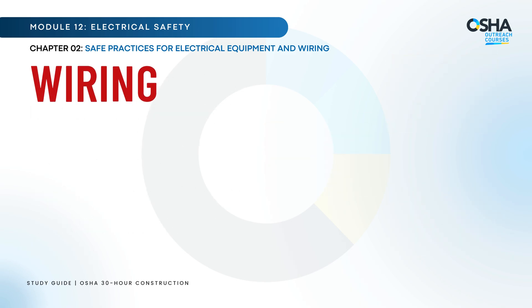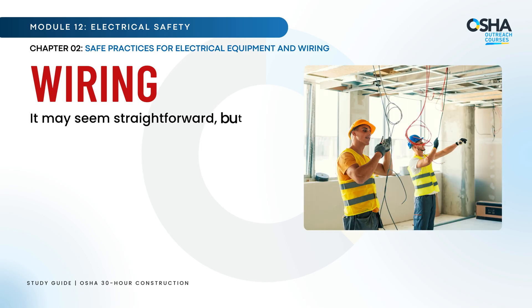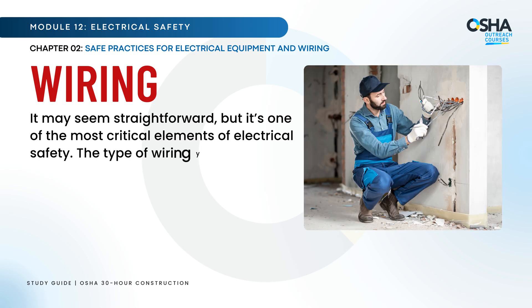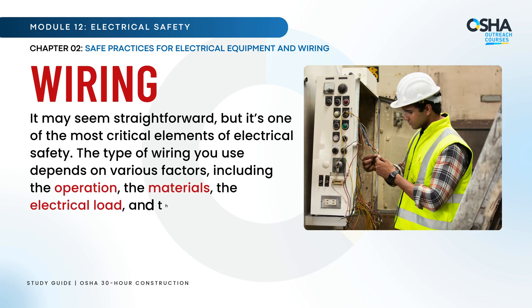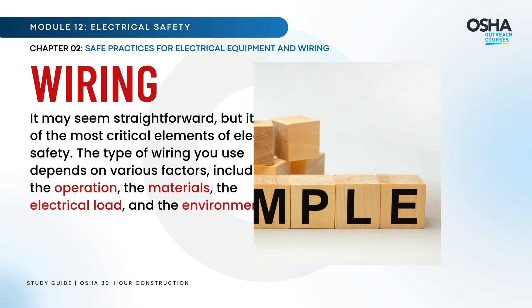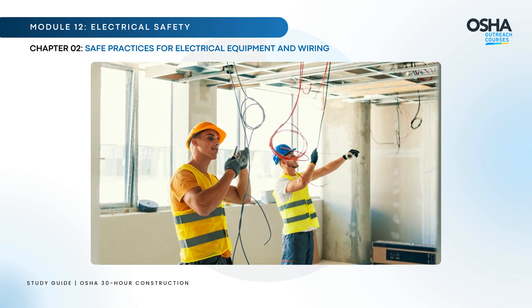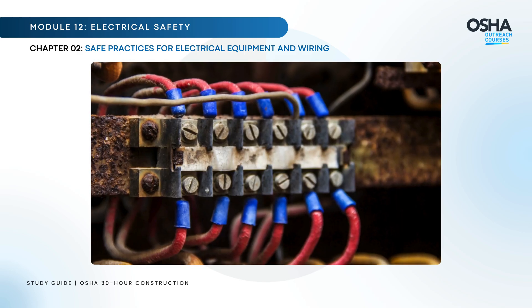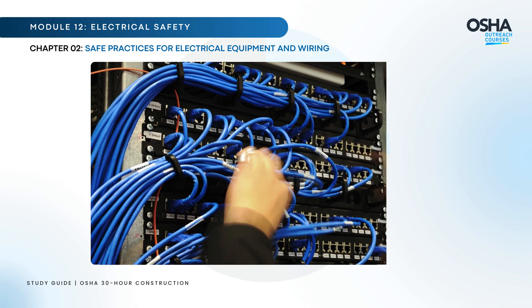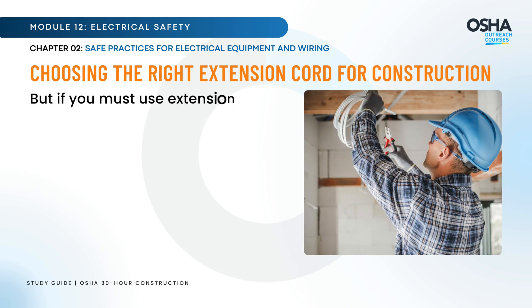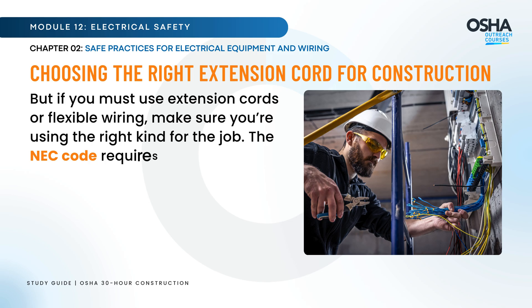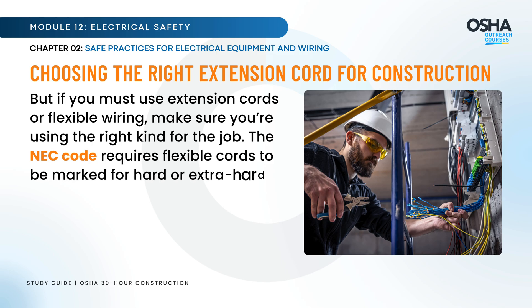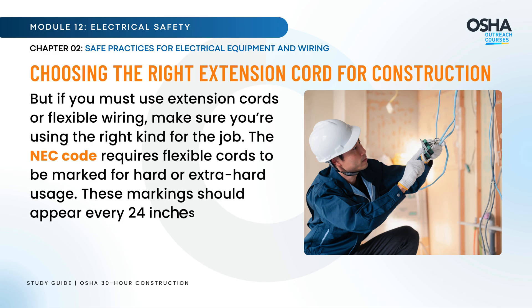Let's start by talking about wiring. The type of wiring you use depends on various factors, including the operation, the materials, the electrical load, and the environment. In construction, wiring must withstand tough conditions, which is why fixed wiring is always preferred over flexible cords. But if you must use extension cords or flexible wiring, make sure you're using the right kind for the job. The NEC code requires flexible cords to be marked for hard or extra hard usage, and these markings should appear every 24 inches on the cord itself.